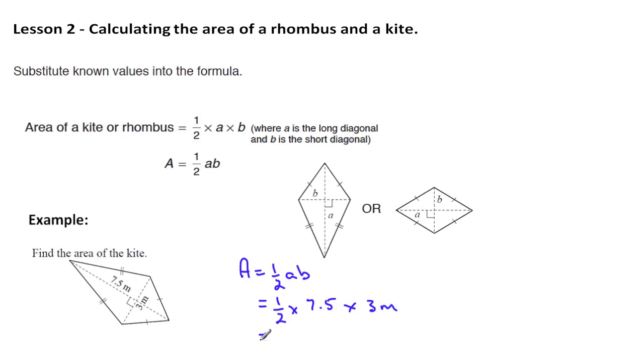And when we multiply these together half times 7.5 times 3 gives us 11.25 square meters. Remembering again that the units for area are square units.